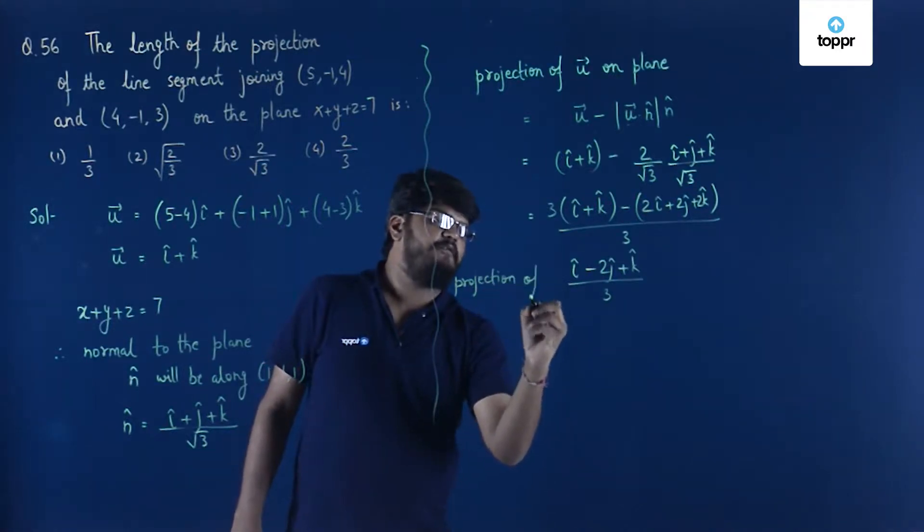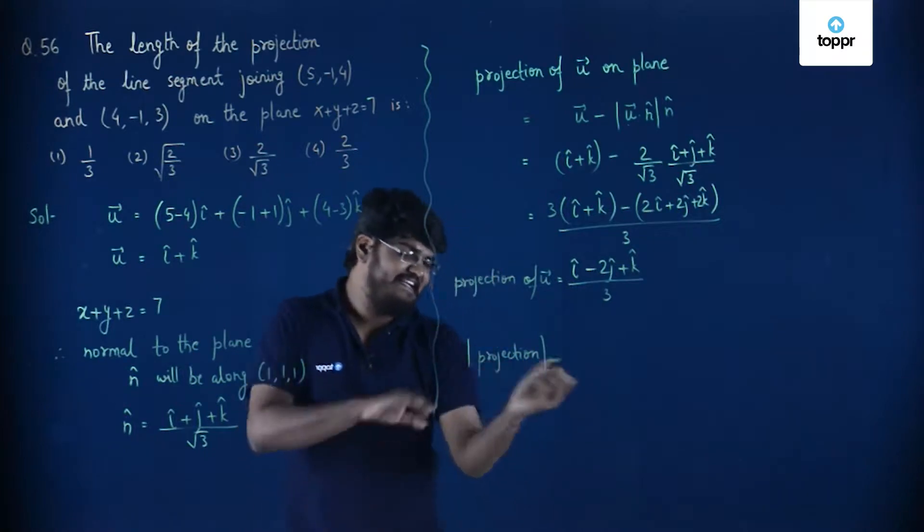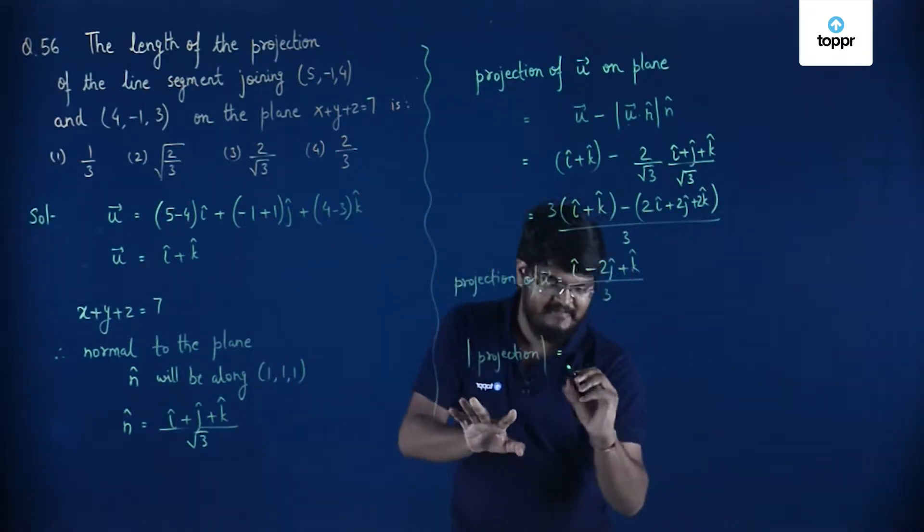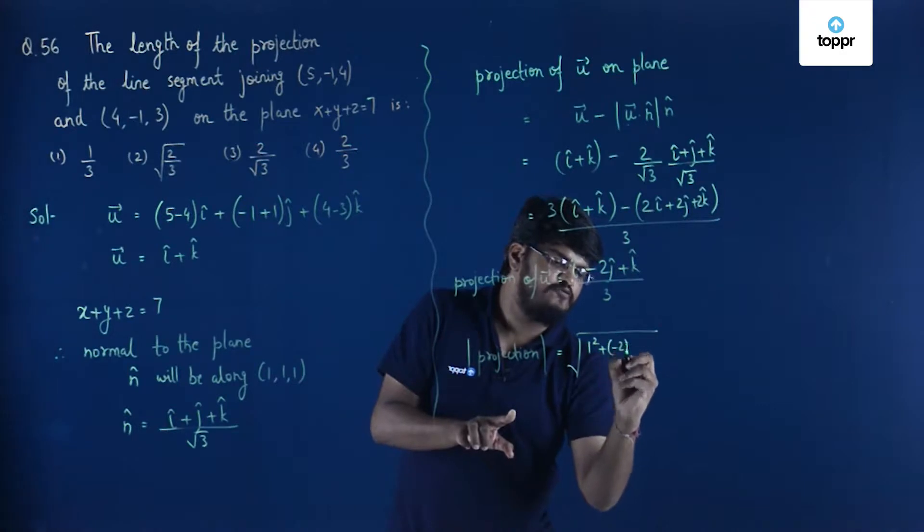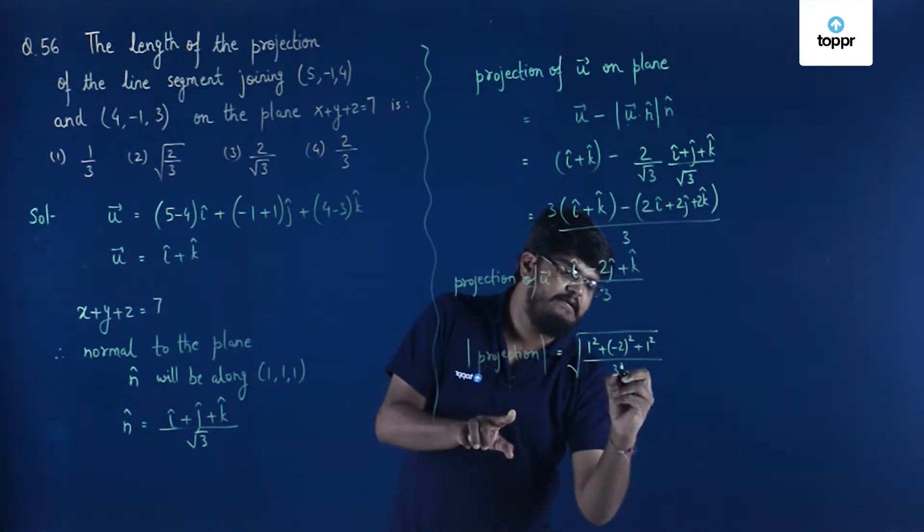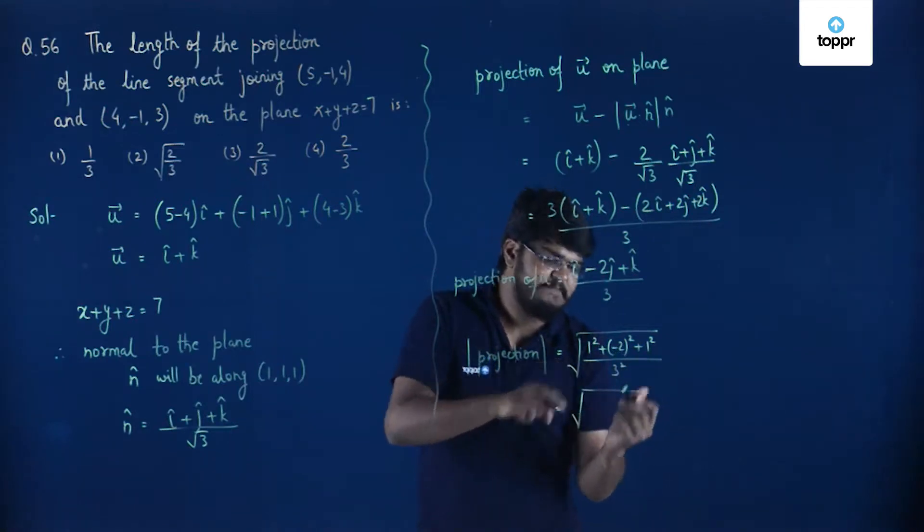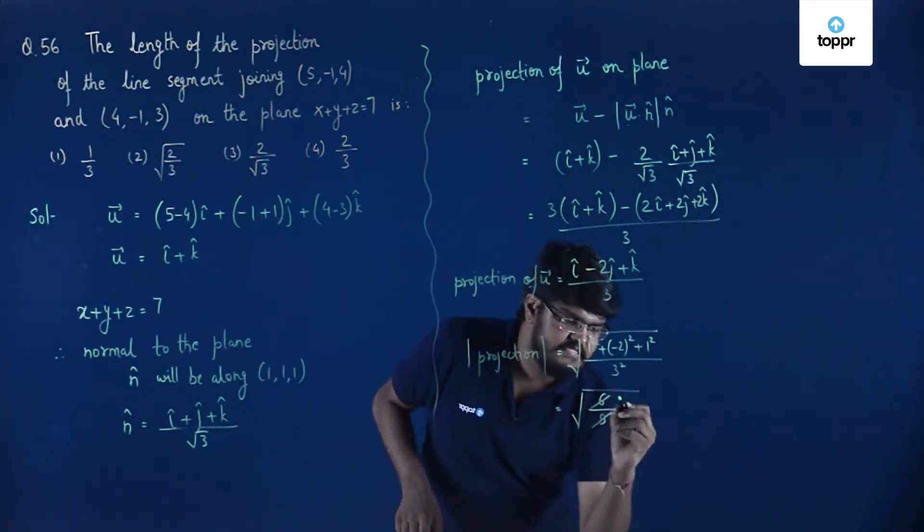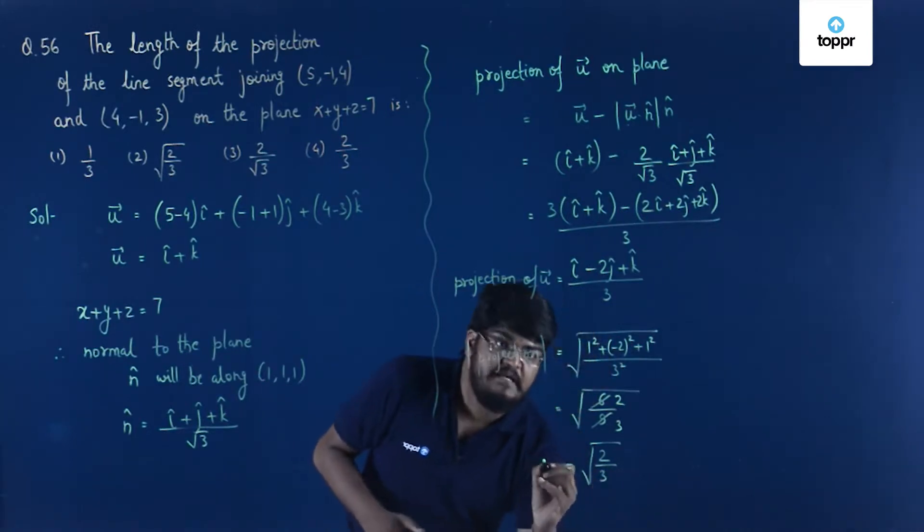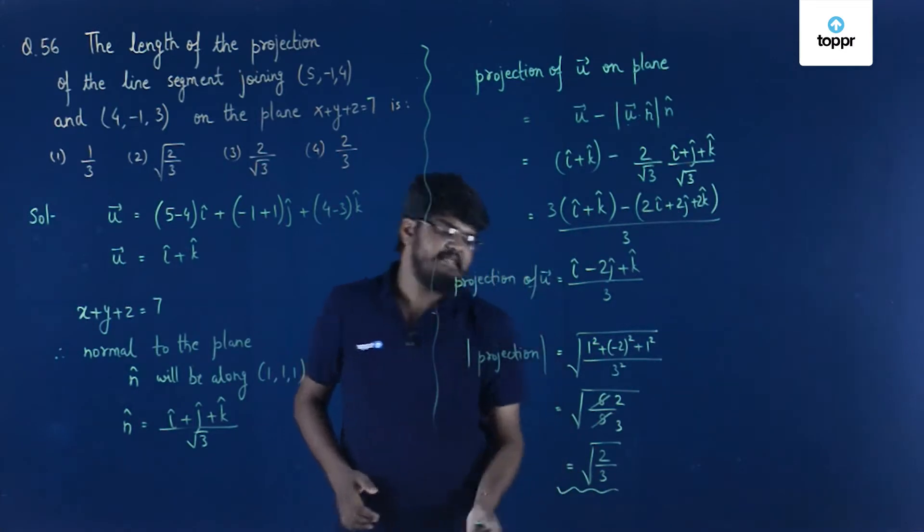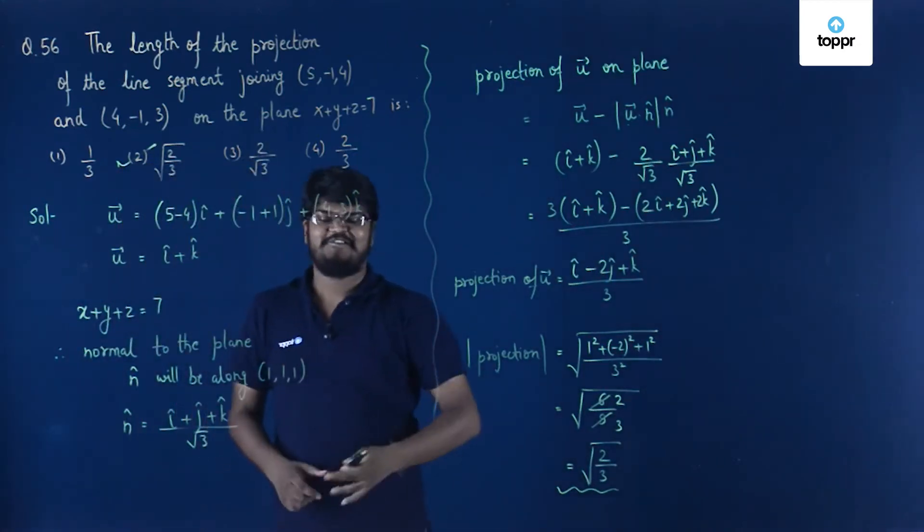Projection of u vector. Now, the magnitude of projection will be √(1² + (-2)² + 1²) / 3². That will be √(1 + 4 + 1) / 9 = √6/9. You can simplify it: it will become 2/3, which is √(2/3). So the magnitude of projection is actually equal to √(2/3), and you can see that it is option 2. So option 2 is the correct answer.